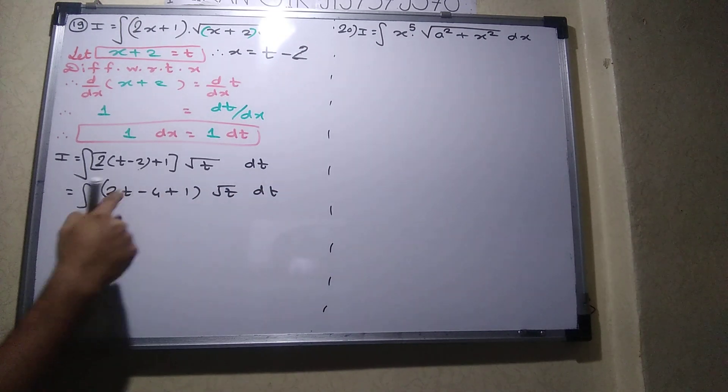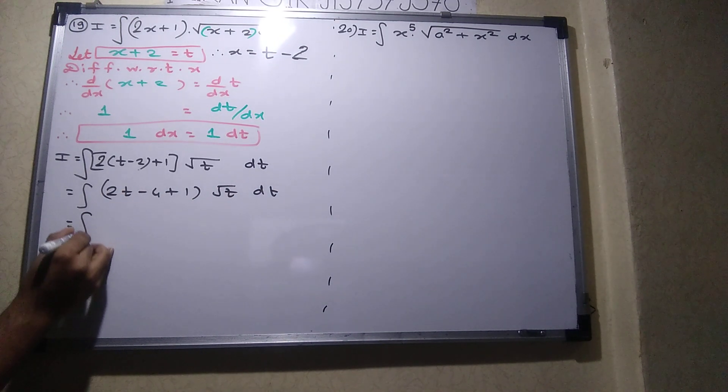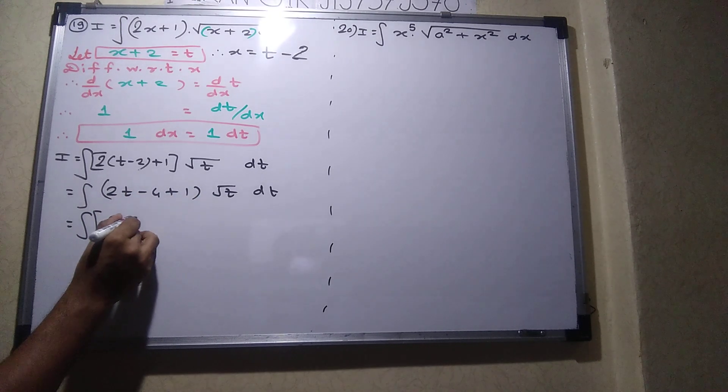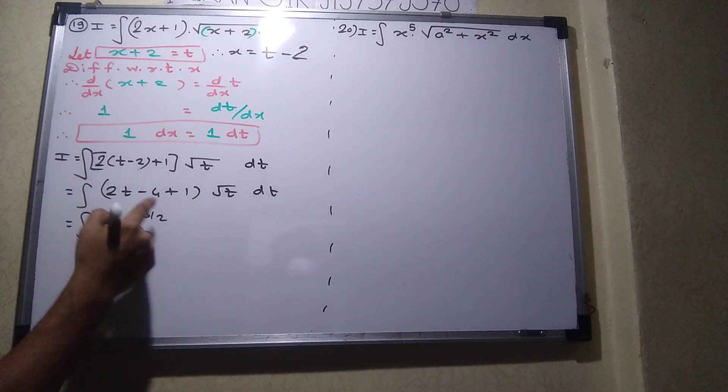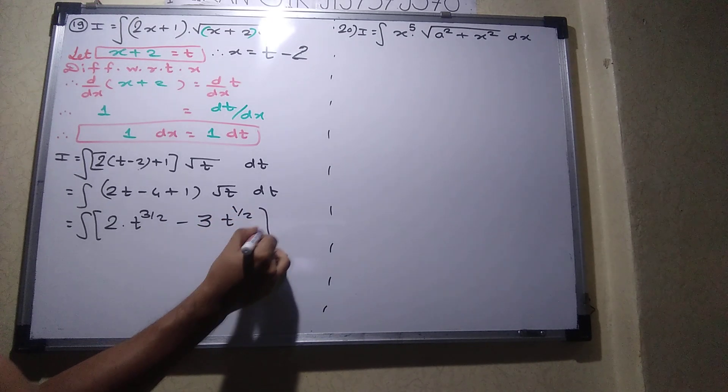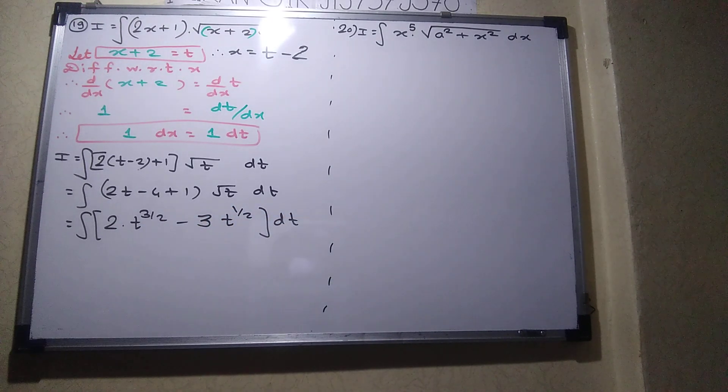Now we will multiply this root T. Integration of T into root T is what? T raise to 3 by 2. Minus 4 plus 1 minus 3. T raise to half. Now it is easy to integrate.